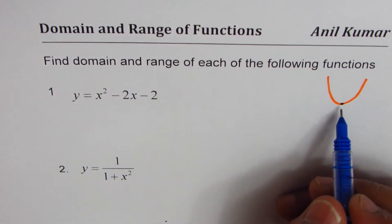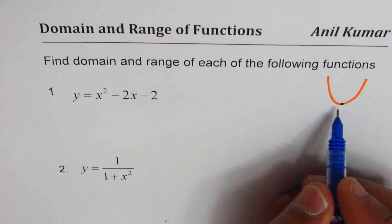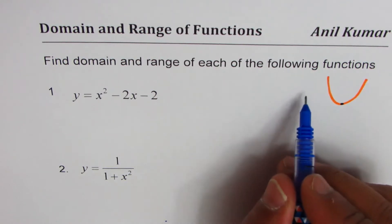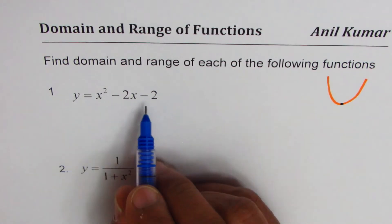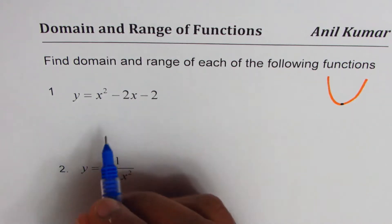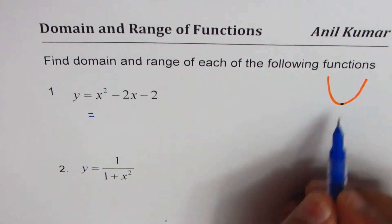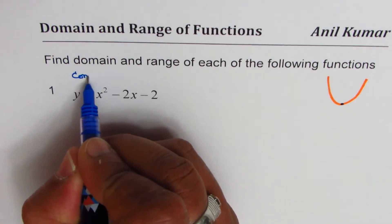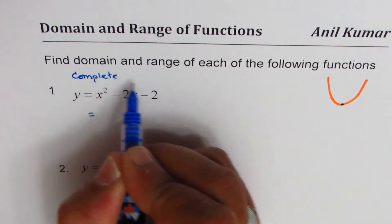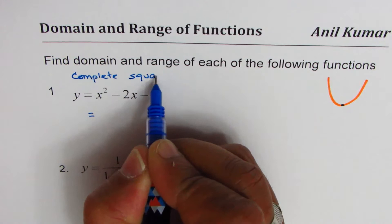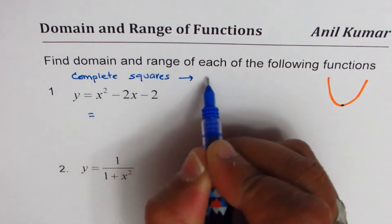A couple of ways. One, you can say the x value is minus b by 2a, or you can complete the squares. So we prefer to complete squares. So to find vertex, we'll complete squares so that we get vertex form.